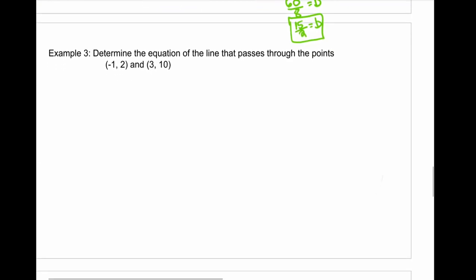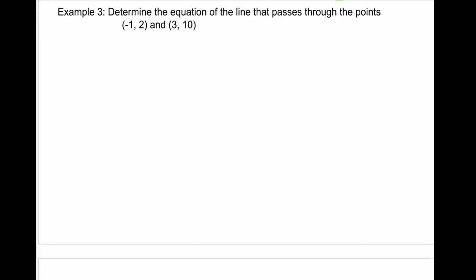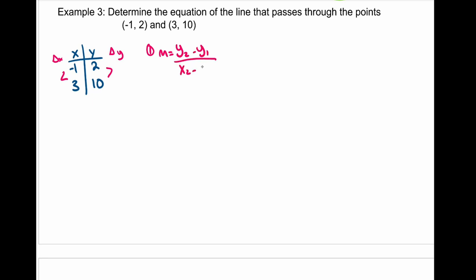Example 3 is the same idea — we're given two points and want to find the equation of a line. We're going to put them into a table of values to help organize. We have (-1, 2/3) as point 1 and (3, 10) as point 2. Using the algebraic method: y₂ - y₁ over x₂ - x₁. The y value of the second point is 10, minus the other y value 2/3, over the x value of the second point 3, minus the other x value, minus negative 1. We get 8 over 4, which reduces to m = 2.